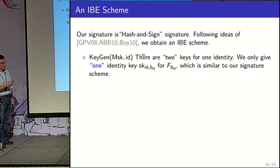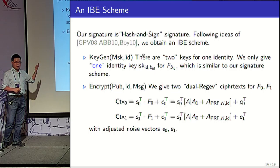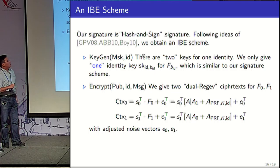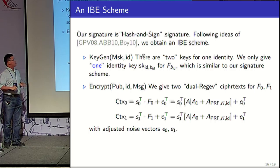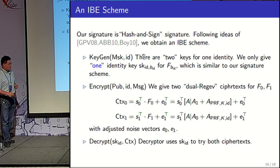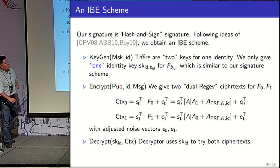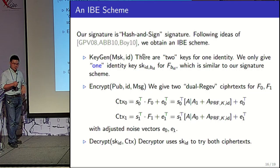In the IBE key generation, the identity key is essentially the signature. For each identity, we have two identity keys but give only one. To encrypt messages, we construct two ciphertexts using dual regev encryption. The decryptor has only one key, so it tries each ciphertext — we need to put some redundancy in the ciphertext.